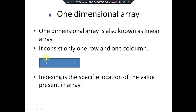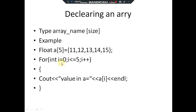The index will specify the location of each value in the array — it contains the address. So if the value is present at index zero, it will specify the first element; if it is at index one, it will specify the second. This gives a clear overview of what indexing is and how the array is declared.